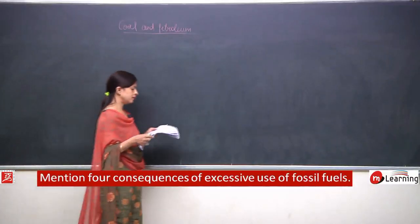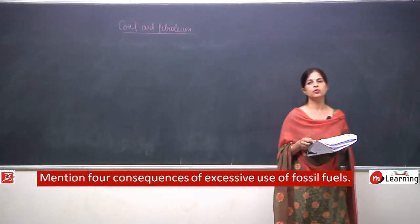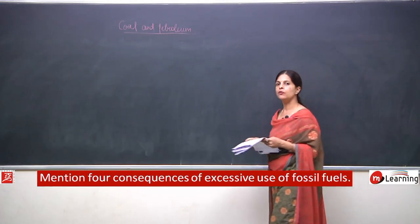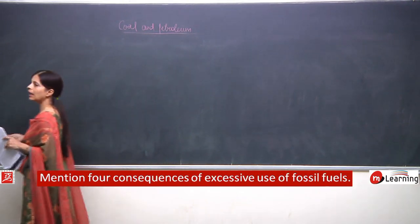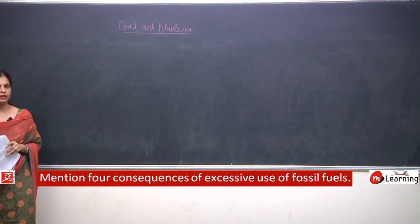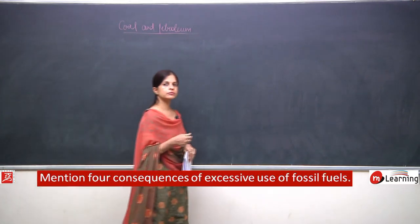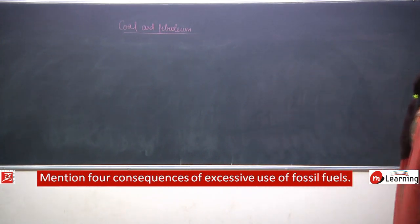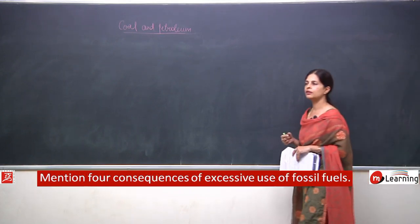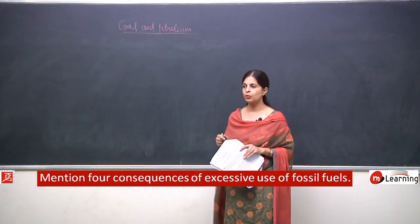Question number 16: mention four consequences of excessive use of fossil fuels. So what are the consequences - what will happen if we keep on using fossil fuels? It will create an enormous amount of pollution, acid rain will increase, then global warming, and submerged areas will go inside the water.